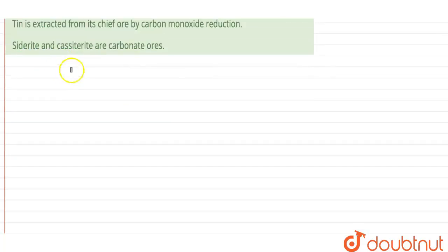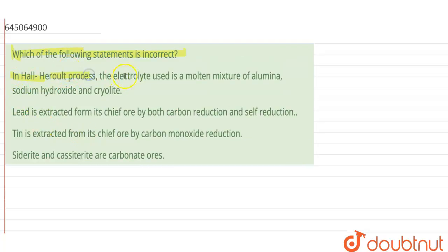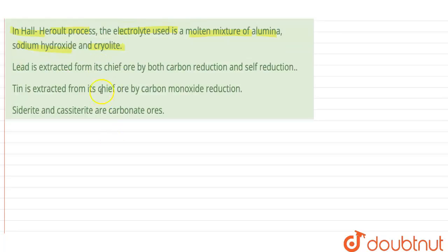To begin with the first statement: In Hall-Heroult process, the electrolyte used is a molten mixture of alumina, sodium hydroxide and cryolite. This is not the case. This is a false statement. Statement A itself is the false statement.